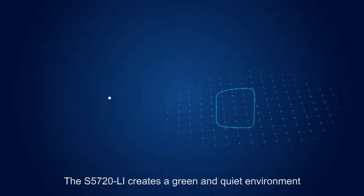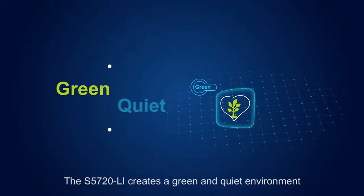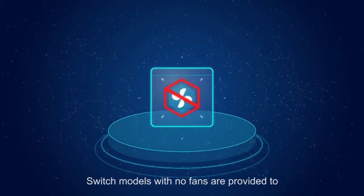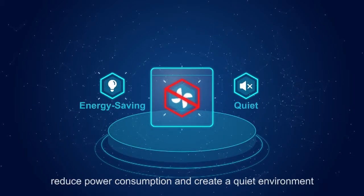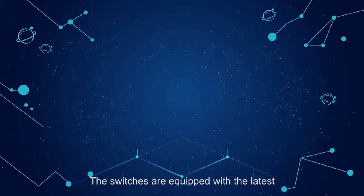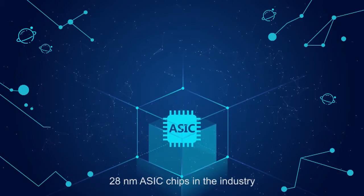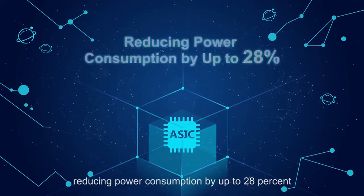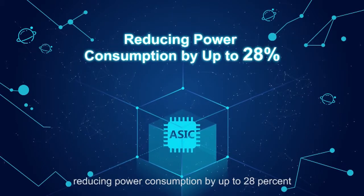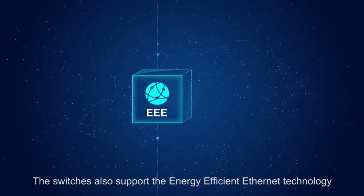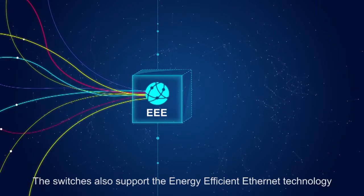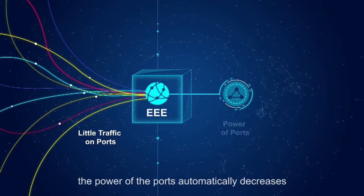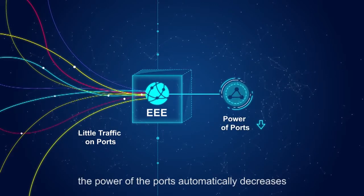The S5720 Li creates a green and quiet environment. Switch models with no fans are provided to reduce power consumption and create a quiet environment. The switches are equipped with the latest 28 nanometer ASIC chips in the industry, reducing power consumption by up to 28%. The switches also support energy-efficient Ethernet technology. When little traffic is transmitted on ports, the power of the ports automatically decreases.